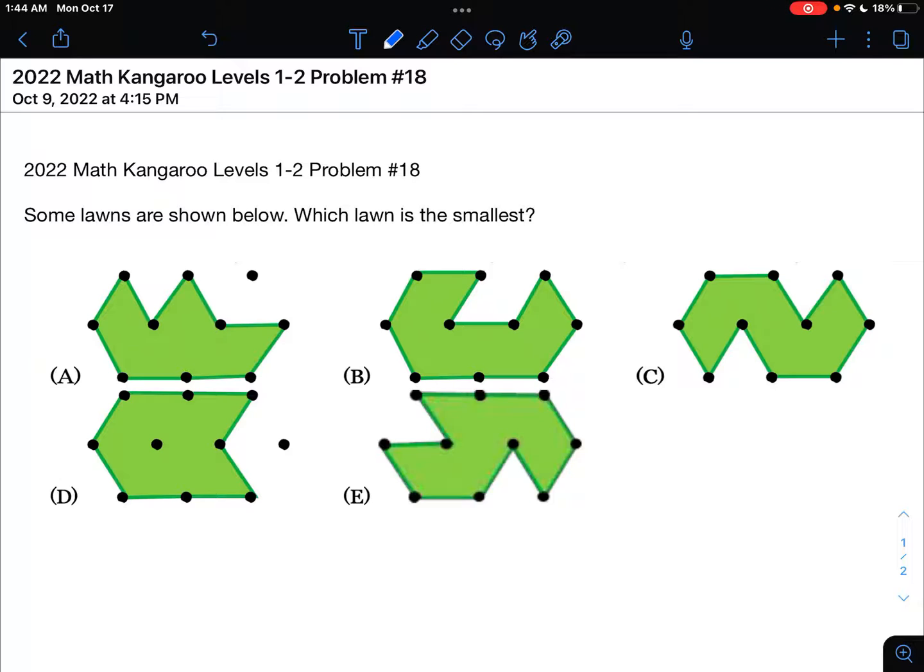Let's start with A. For example, we can draw our triangles as so, and then we can see that we have 1, 2, 3, 4, 5, 6, 7 triangles that make up this lawn.